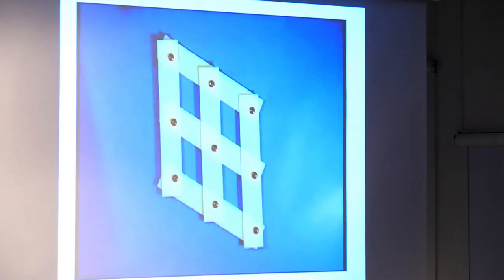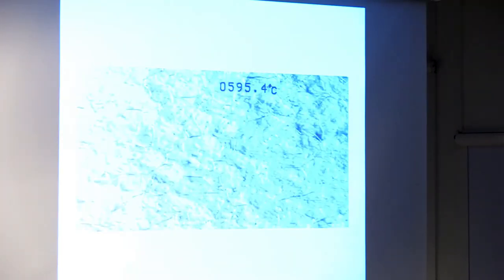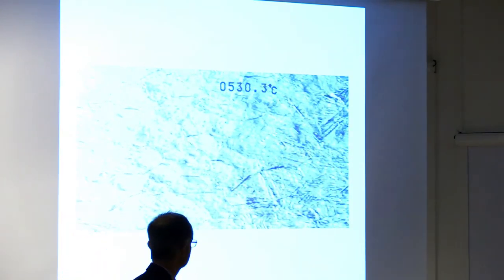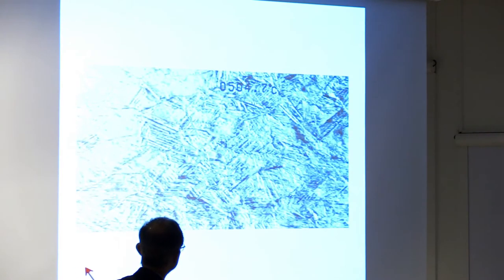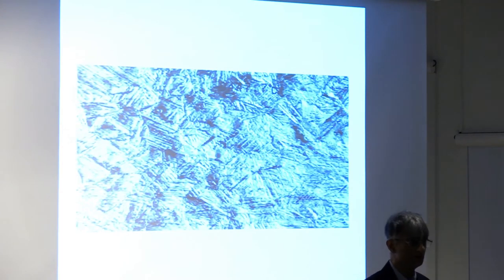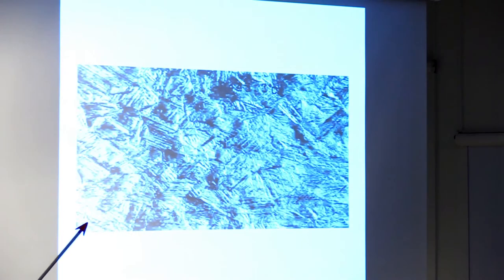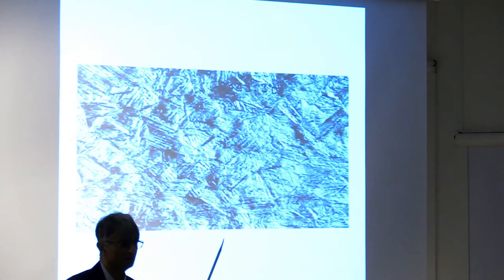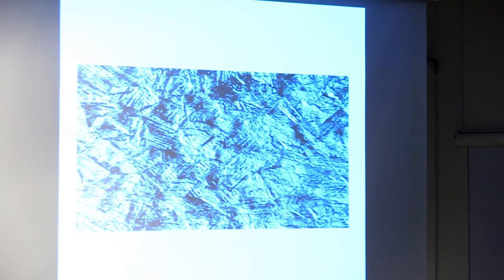I'm going to show you the real deformation that happens when displacive transformations occur, and this applies to whether it's martensite, bainite, or Widmanstätten ferrite. As the temperature drops, you will see massive displacements caused by the formation of plates. If you weren't aware this is steel, it would be like a mountain range forming in the Himalayas — the displacements are very, very large. The structure of martensite is more stable below a certain temperature than austenite, and we are forming these phases at temperatures where atoms cannot diffuse easily.